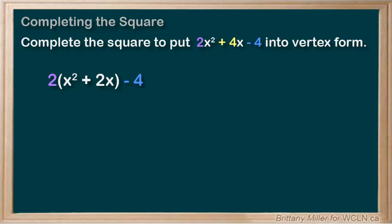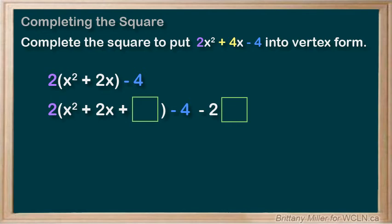Then we add our boxes. We add one box inside of the brackets which means it's actually multiplied by that 2. So we need to subtract 2 times the box on the end keeping things equal. Now we just do it like normal ignoring the number out front.